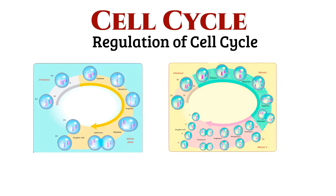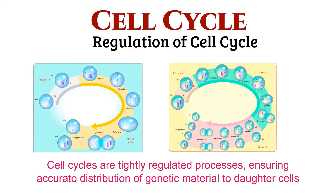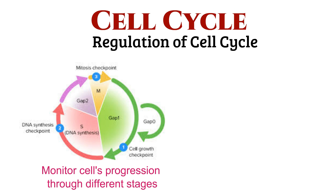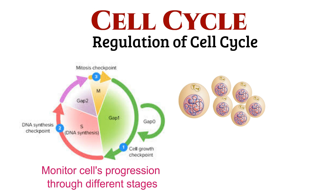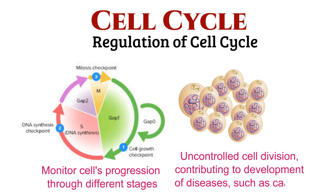Both types of cell cycles are tightly regulated processes, ensuring accurate distribution of genetic material to daughter cells. Checkpoints and regulatory proteins play a crucial role in monitoring the cell's progression through different stages. Dysregulation of the cell cycle can lead to uncontrolled cell division, contributing to the development of diseases, such as cancer.